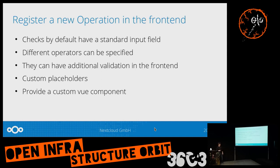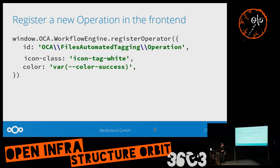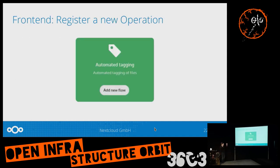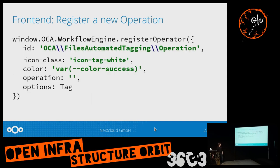The front-end also does its own validation, and each component can have its own parts — everything is a Vue.js component. Here's an example for automatic tagging: it declares its own icon and a color — a green one — which is shown in the selector. It also has the options component, which loads available tags from the system and offers a chooser to pick them.